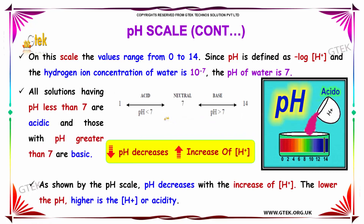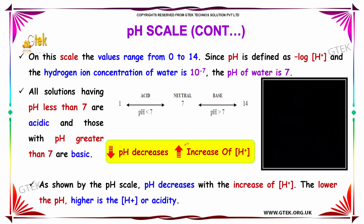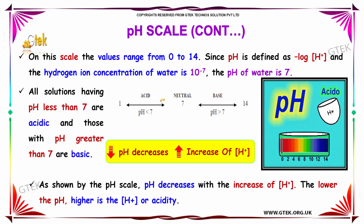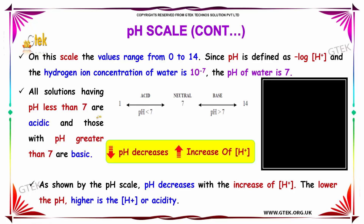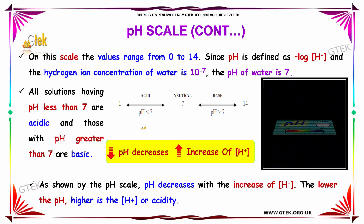On this scale, the values range from 0 to 14. Since pH is defined as the negative log of H+ ion concentration and the hydrogen ion concentration of water is 10^-7, the pH of water is 7. All solutions having pH less than 7 are acidic, and those with pH greater than 7 are basic. As shown by the pH scale, pH decreases with the increase of H+ concentration — the lower the pH, the higher the acidity.